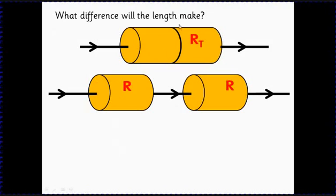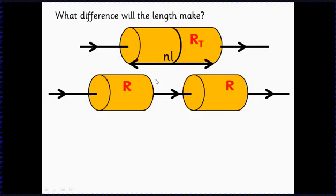Let's look at length. Imagine this wire here — it's got a total resistance R_T. However long it is, it'll be made of lots of smaller wires one after the other. We can split this wire and imagine any number of sections, each one with a resistance of R. So if the total wire is n lots of length l with area A, each section has length l and area A.